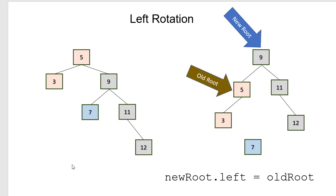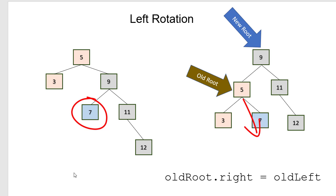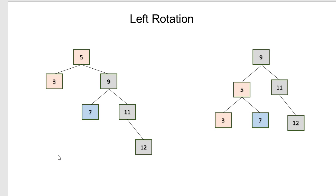So the first thing we're going to do is we're going to set new root's left subtree to be the old root. So that gives us this. Now the old root is the left subtree of the new root. The next thing we're going to do is we're going to set the right subtree of the old root to the old left subtree of the new root, which is seven here. And so you can see what happens there. Now once we've done this, our tree is balanced and there's no more work to be done.